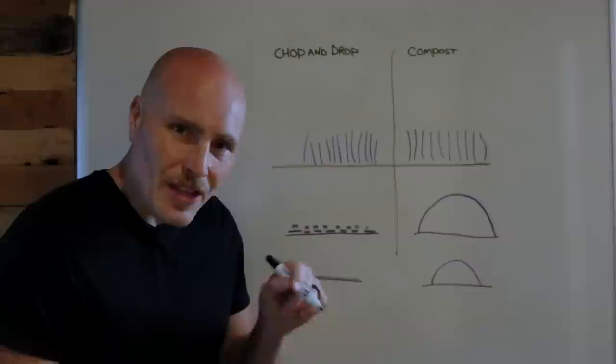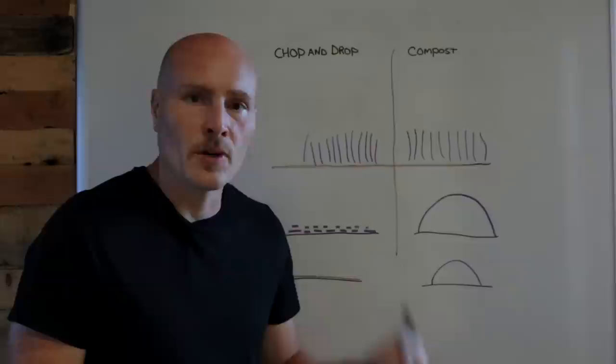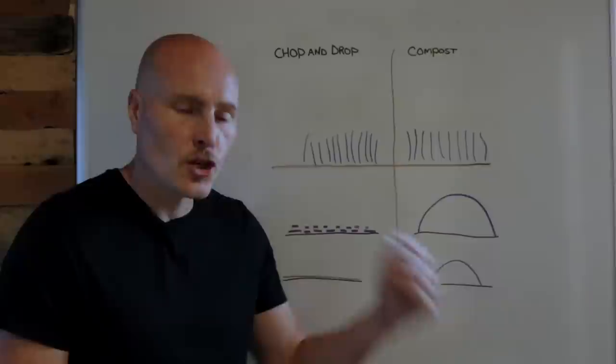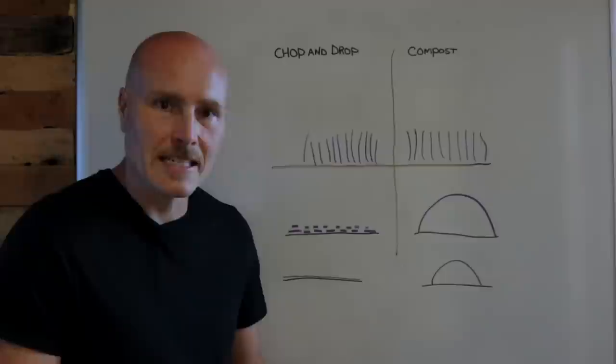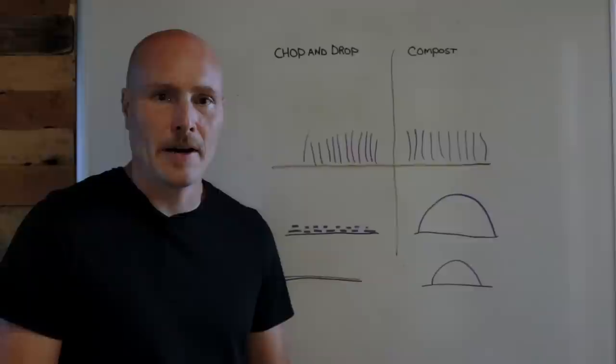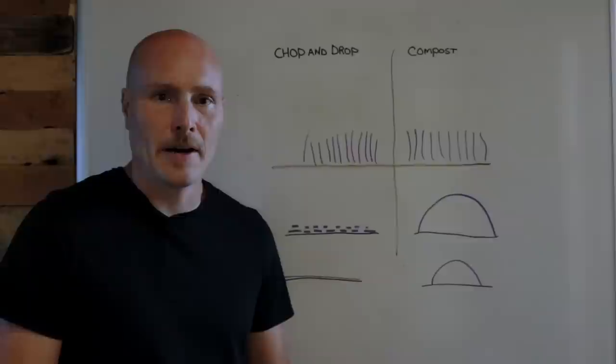I want to make it clear right up front that I'm comparing two things in this video, chop and drop and composting, to get rid of a previous crop or a cover crop. We're not counting methods like turning it in or tilling it in. Yes, that's a great method if you're into tillage to get biomass into the soil, but it's not part of this comparison. We're only doing an A to B comparison. Chop and drop versus composting.